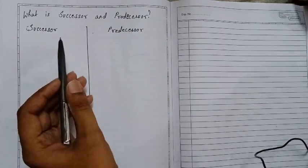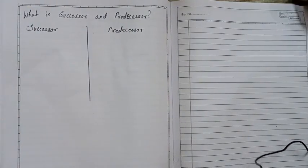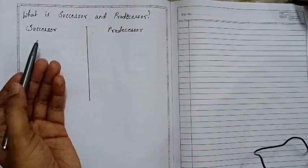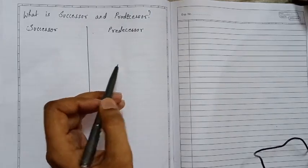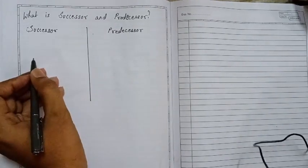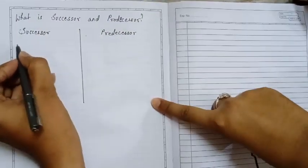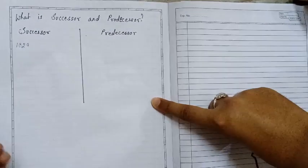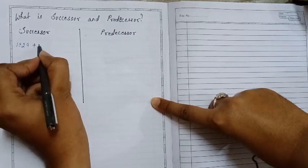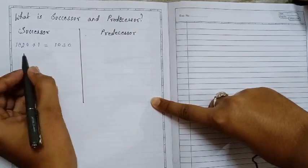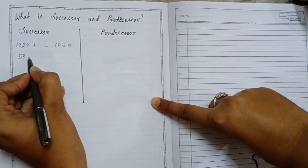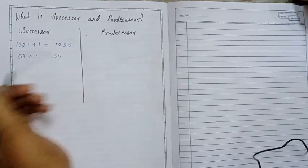Now let's talk about successor and predecessor. The successor is the number directly after a given number, and the predecessor is the number directly before it. To find the successor, add 1 to the given number. For example, the successor of 1029 is 1030. For 53, the successor is 54.